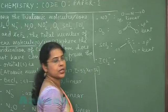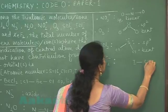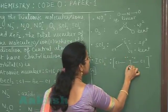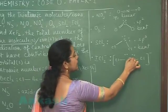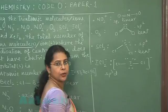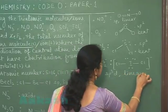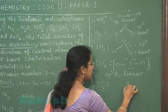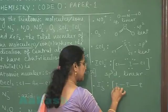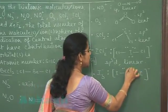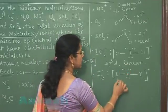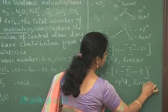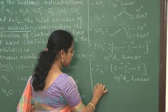In ICl2 negative, the central atom is iodine bonded to two chlorine atoms. This molecular anion has two bond pairs and three lone pairs, so the central atom is sp3d hybridized and the molecular shape is linear. The next species is I3 negative ion. The central iodine atom is bonded to two iodine atoms through single bonds, also having three lone pairs — two bond pairs, three lone pairs — so it is sp3d hybridized and the molecular shape is linear.